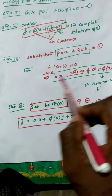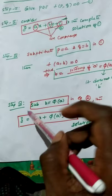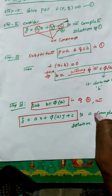In the fourth step we substitute b = φ(a) in equation two. Then we get z = ax + φ(a)y + c as the complete solution. In this procedure we must remember two steps mainly.